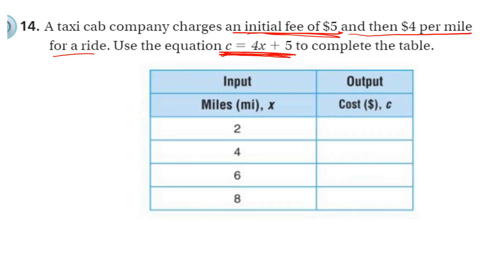Okay, use it to complete the table. Well, now you're just plugging in. So four times two is eight plus five would be $13.